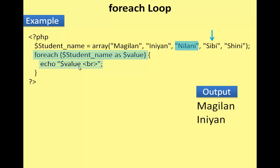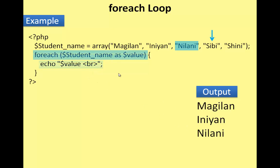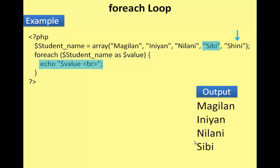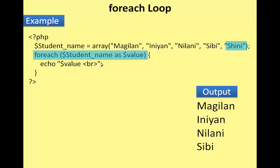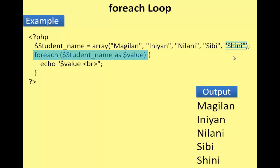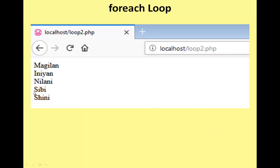For example: student name array as value — the array value is output. By taking the output, its value is displayed. This is the output in the browser.